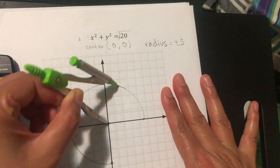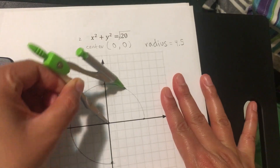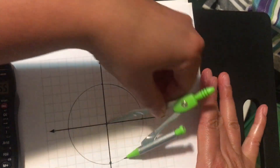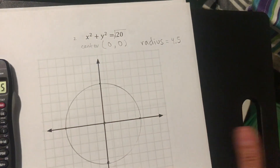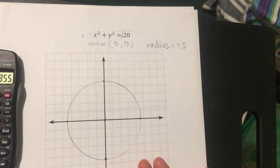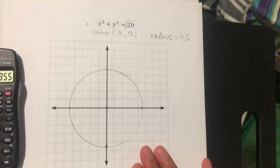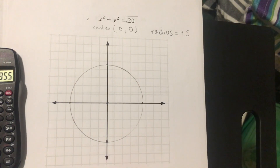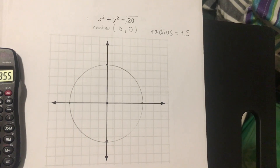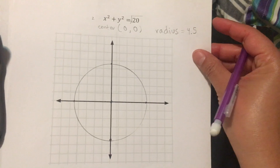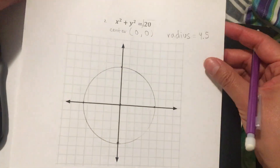Place the compass at the center, align it to one of the four points, and graph your circle. It's not perfectly round but you can see it touches all four points.